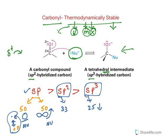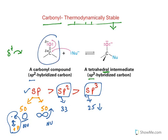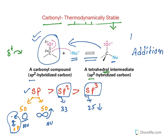When the sp2 carbon converts to the tetrahedral sp3 intermediate, the molecule moves from higher to lower s-character. The sp2 carbonyl has more s-character and is therefore thermodynamically more stable. This is why the reaction is shown as reversible — when given the chance, the tetrahedral intermediate converts back to sp2. Only a strong nucleophile can drive the reaction forward to form the nucleophilic addition product.